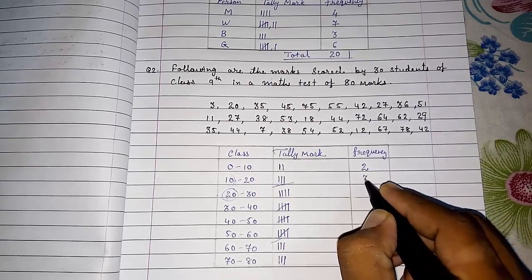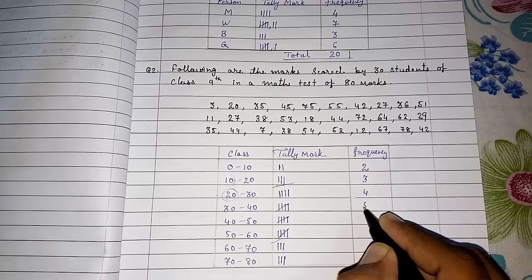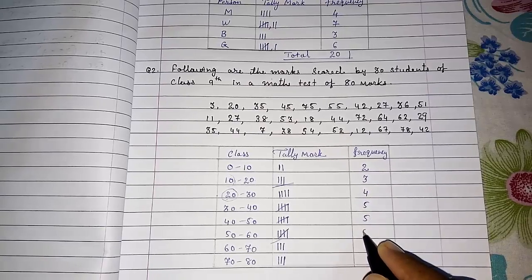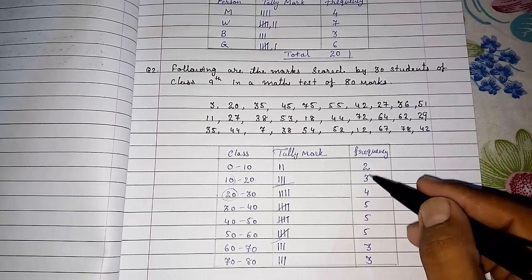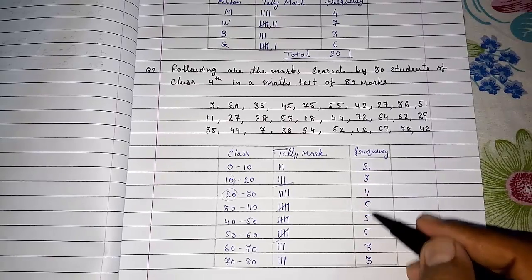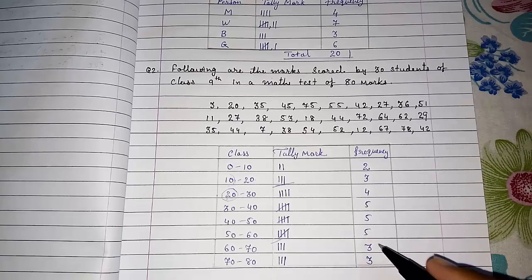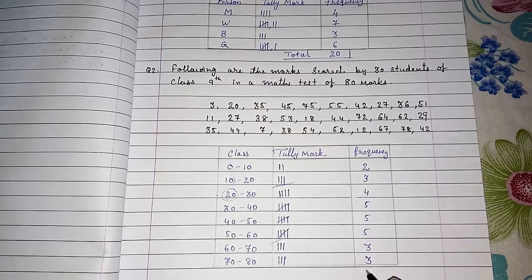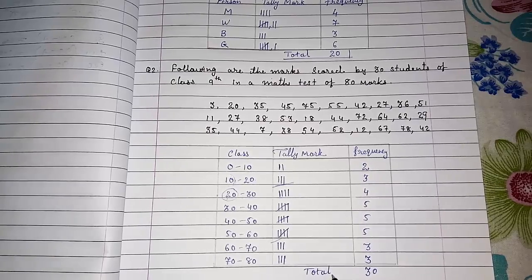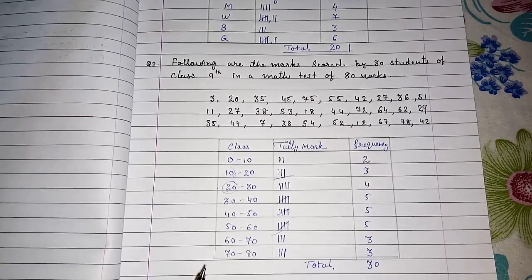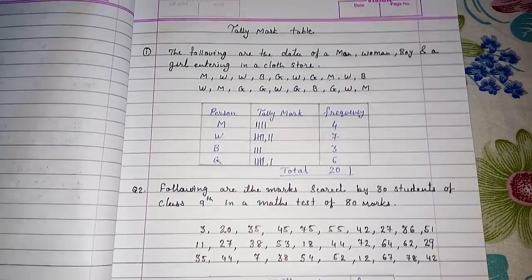Now the total: two, three, four, five, five, five, three, and three. We have to do total also. Five, nine, nine and ten is nineteen, twenty, twenty-four, and six is thirty. So the total is thirty. This way we can make tally mark table out of all the data as given to you.